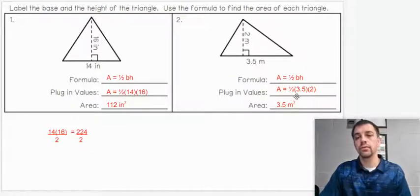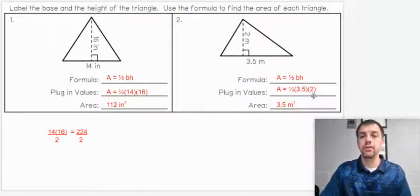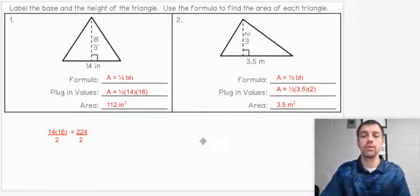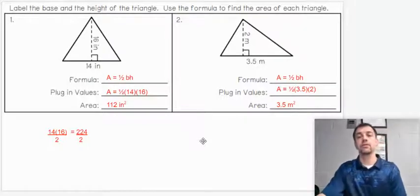Alright, so we should have one-half times 3.5 times 2, which, if you didn't notice, one-half of 2 is 1. So really those two things cancel out, and we have 3.5 meters squared as our solution.